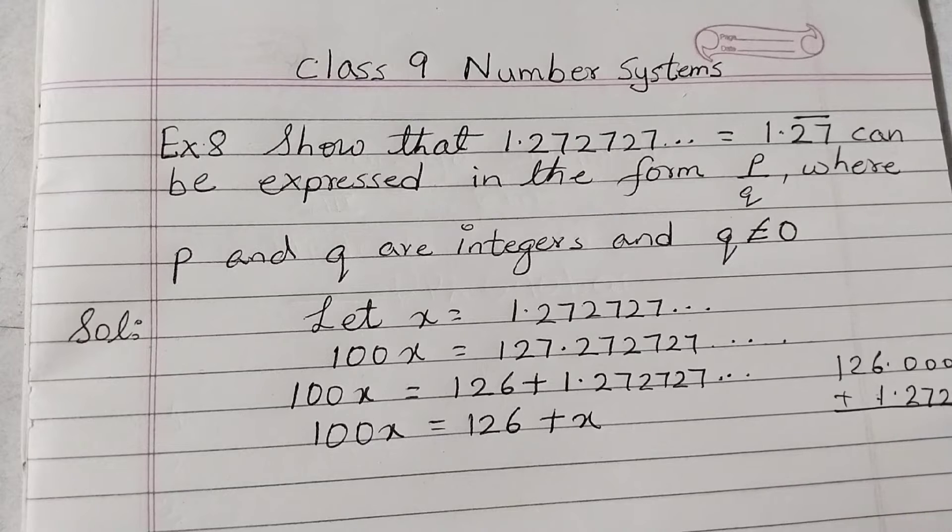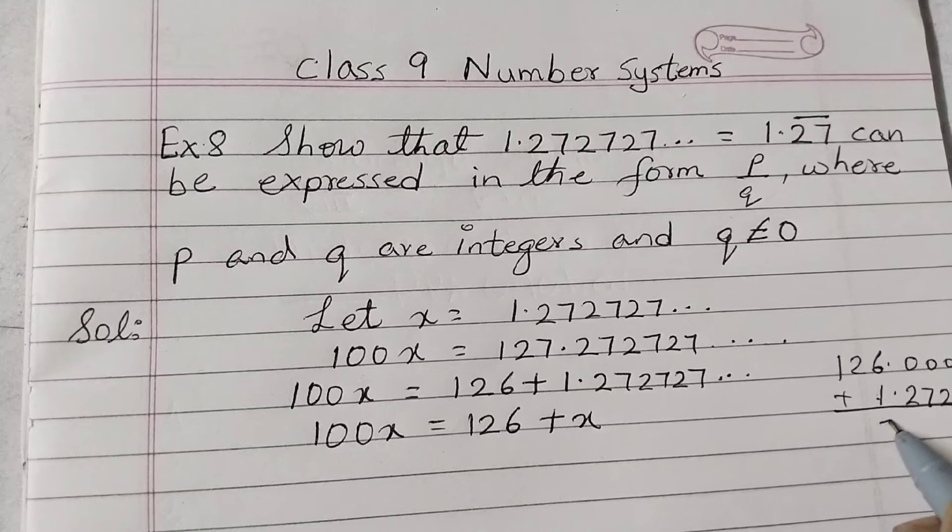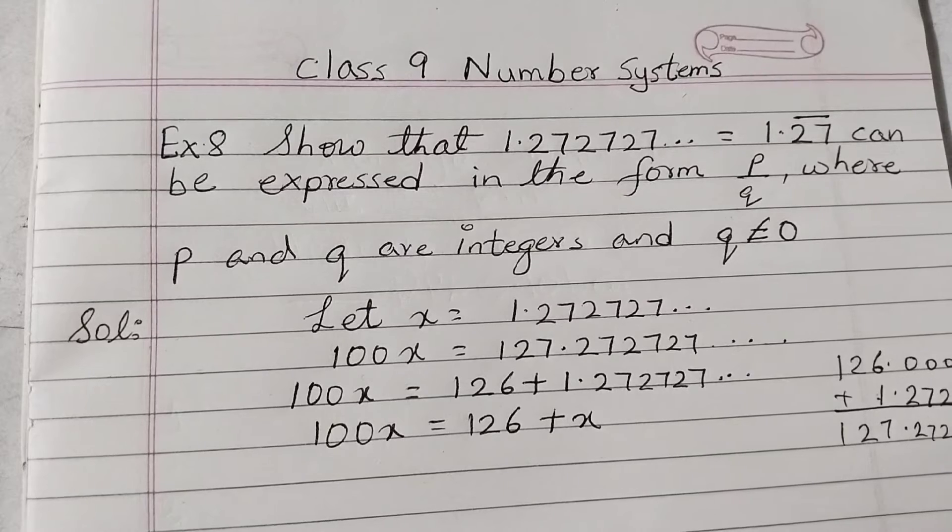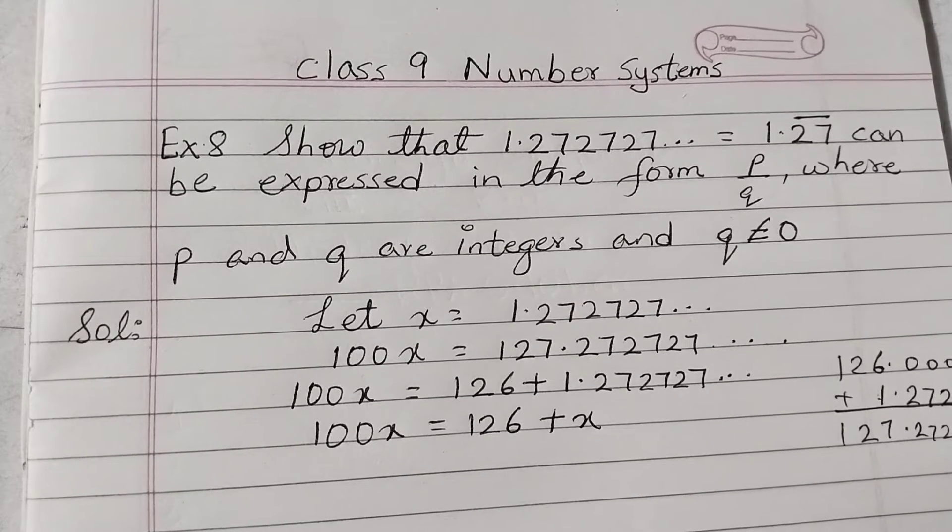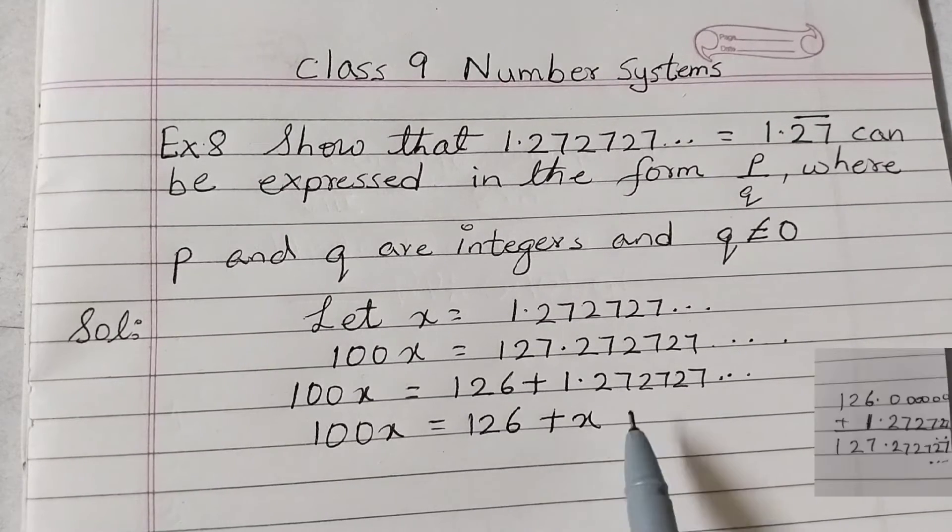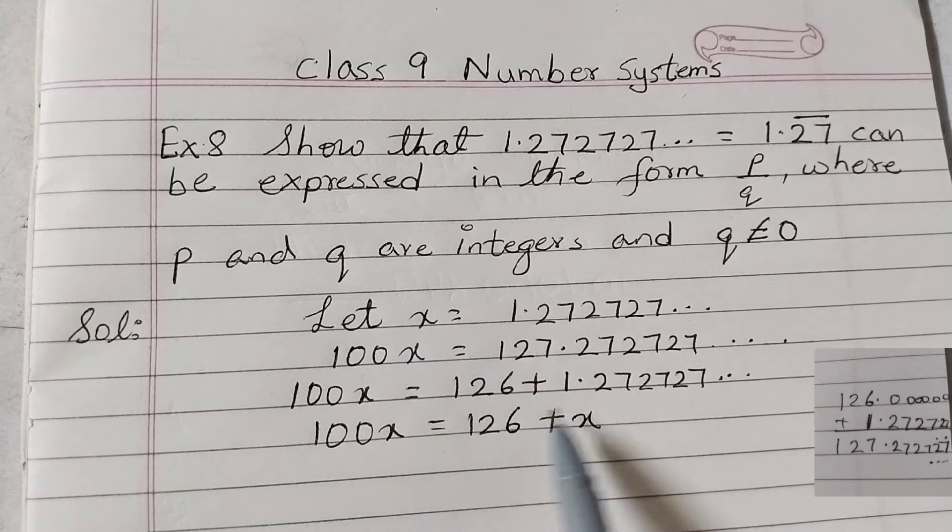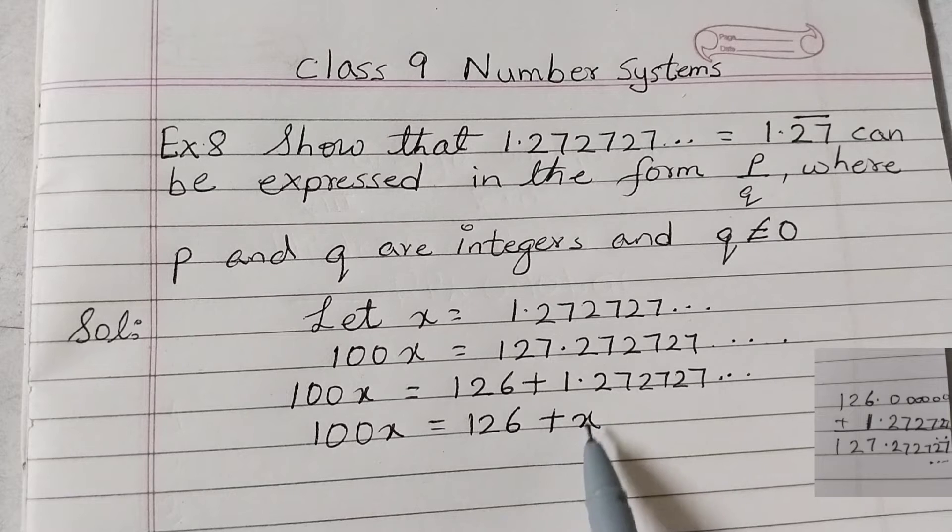And then dot dot dot. Okay, this is same as x, so replace this number by x. So 100x is equal to 126 plus x.